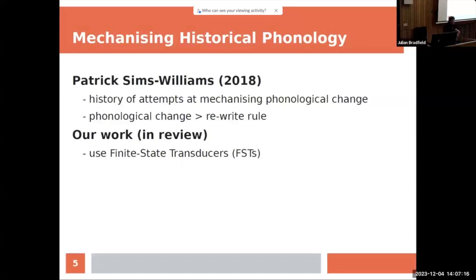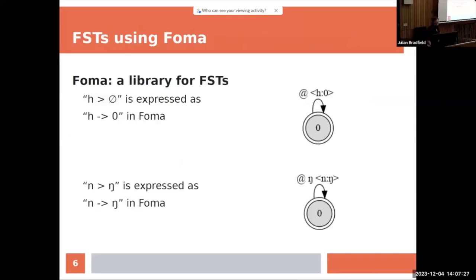So our work today looks at finite state transducers, which is, in my opinion, a very complex name for a very simple thing. Finite state transducers are more or less like you start from a point, these circles that say zero, and as you go through your string of IPA symbols, you decide either you keep them as such and emit them or you replace them by something else. So if I had a rule that said h disappears in all contexts, then I get this.